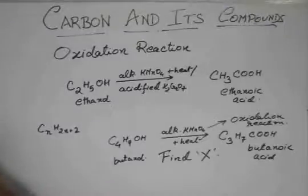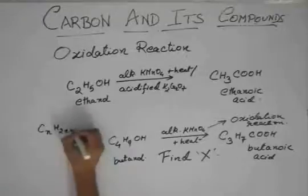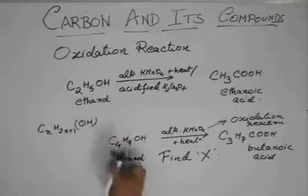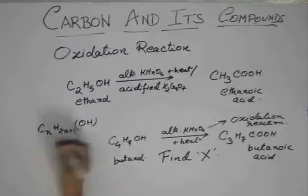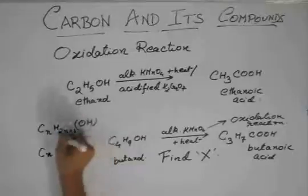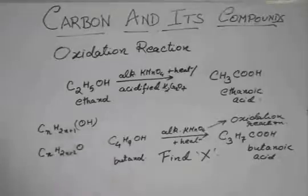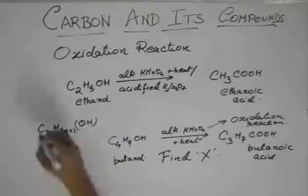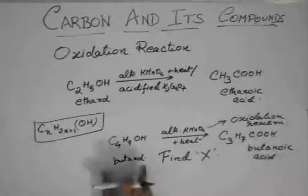So basically, you remove one hydrogen and add an OH group. So this will become 2n plus 1 and it will be OH. So C4H2 into 4, 8 plus 1, 9 and then OH. Actually it is CnH2n plus 2O. But we write the formula like this. So it is better remembering the general formula like this. So this butanoic acid will come from butanol.